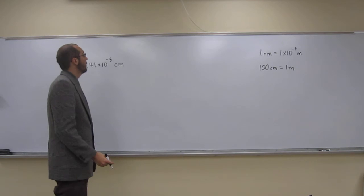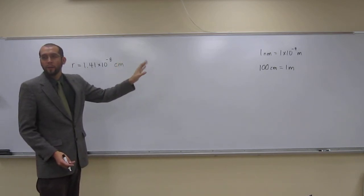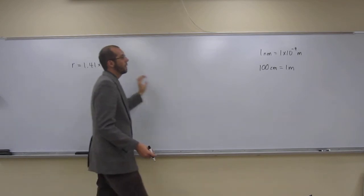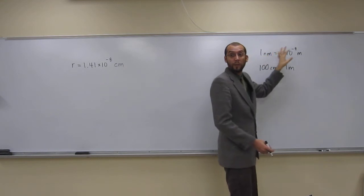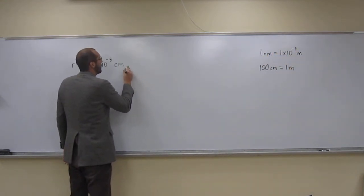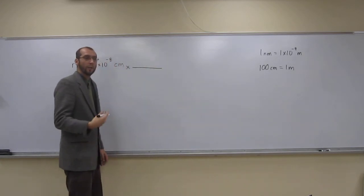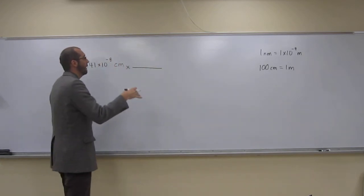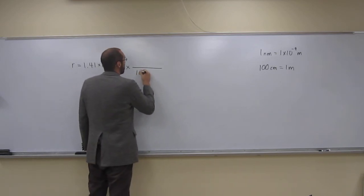So we've got it in centimeters and we want to convert it to nanometers. So we can convert from centimeters to meters, right? And then from meters to nanometers. Does everybody see that? So that's the way I like it. You could actually, if you knew the conversion between centimeters and nanometers in your head, you can do that too. Since we're introductory chemistry, let's just do it this way. It's easy.